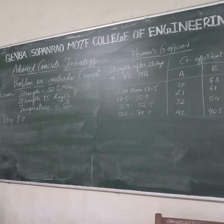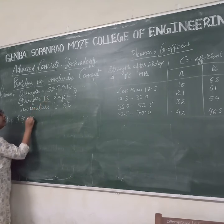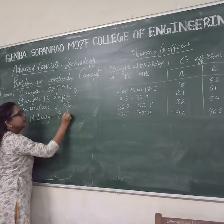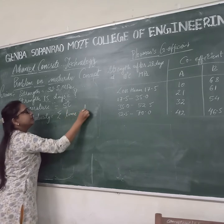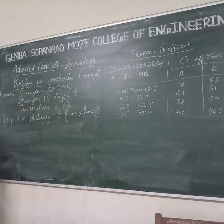Step 1 is to calculate the maturity of the identical concrete at 15 days. Put the formula: maturity is equal to time multiplied by temperature. This is the formula for finding out maturity. Time is given as 15 days, and temperature is 5 degrees centigrade. Now calculate maturity for this question.